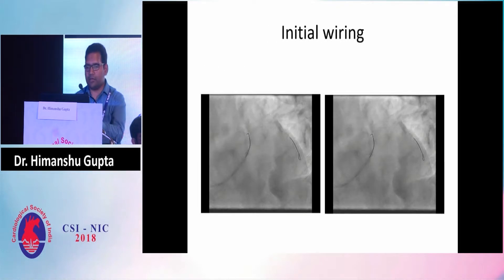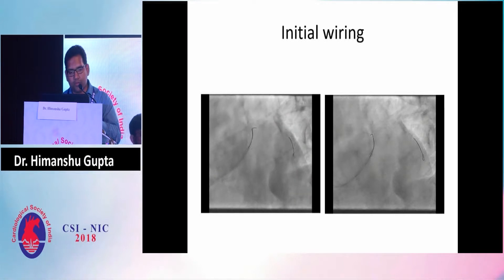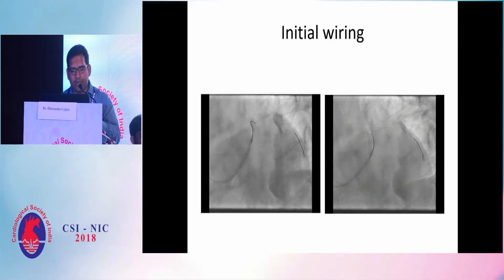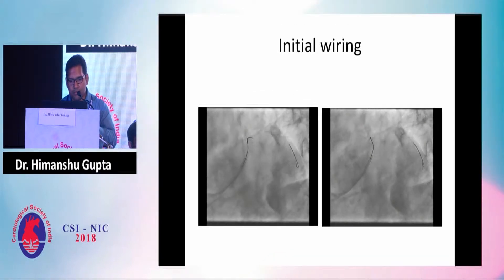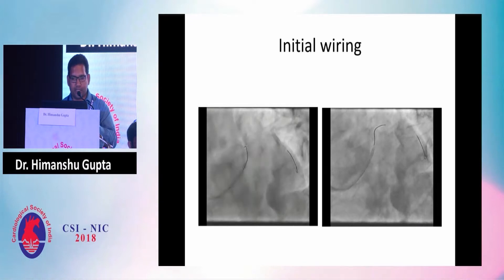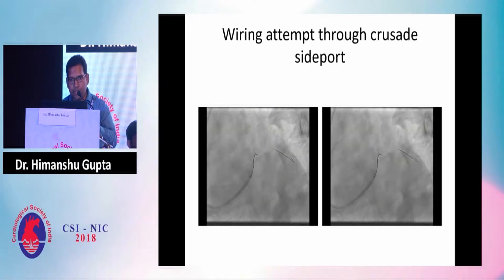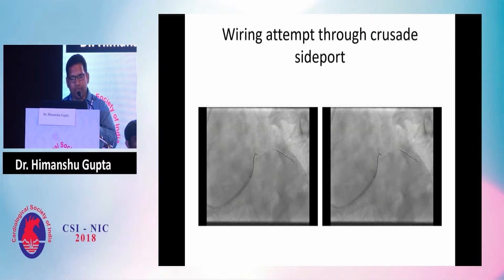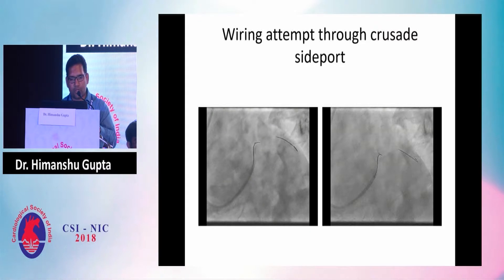We went with initial wiring using a Filter wire and also a Run-Through wire, but we were not able to wire the LCX because of its angulated course. A wiring attempt was then done through a Crusade catheter — a catheter with both end and side holes — wiring the LCX through the side hole. Through the end hole, we put a wire in OM1, and through the side hole we tried wiring the LCX. But again, this was also unsuccessful.